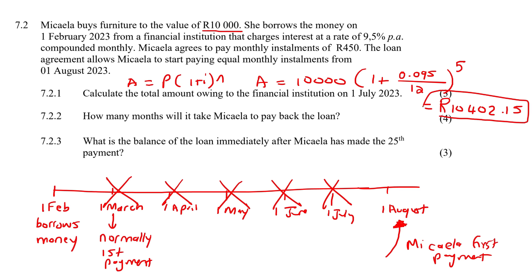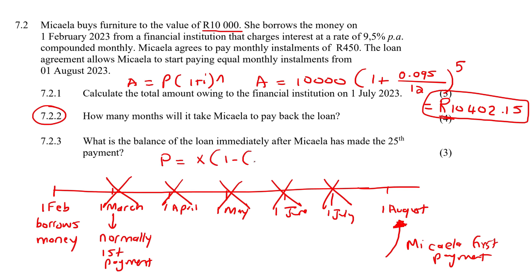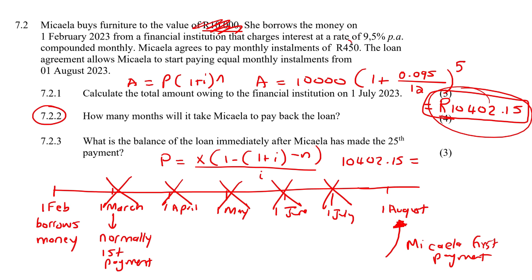This is how much the new loan amount is when Makayla decides to start paying. The next question says: how many months will it take Makayla to pay back the loan? So we now know we're not going to start at 10,000. We're going to use the present value formula: P equals X times (1 minus (1 plus i) to the negative N) over i. We're now using 10,402.15. The monthly payment is 450. The interest rate is 9.5%, so 0.095.